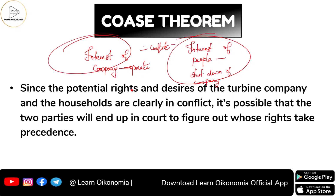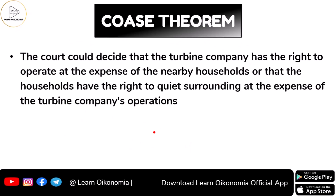In such a situation, both the company and the people can approach a court. The court can tell whose rights prevail over the others'. It could tell that the right of the company is above the right of the people, or it could tell that the right of the people is above the right of the company. The court would be able to decide whether the turbine company has a right to operate. When the turbine operates, it comes at a cost to the people. But if the turbine shuts down, that comes at a cost to the company.